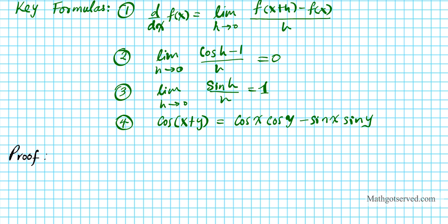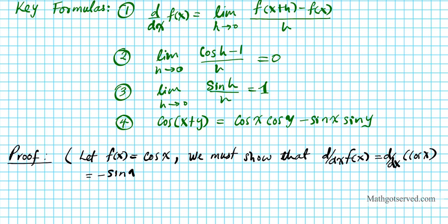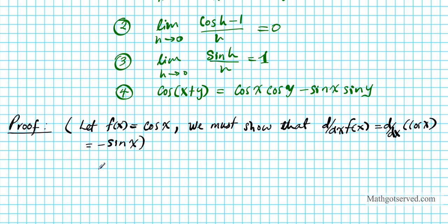What we're going to do, let's write down the objective of the proof at the beginning so we don't lose focus. Let f(x), the function f(x), be what we're starting with, which is cosine x. We must show that its derivative d/dx of cosine x is equal to negative sine x. So the goal is to show that the derivative of our function, which is cosine x, is equal to negative sine x.